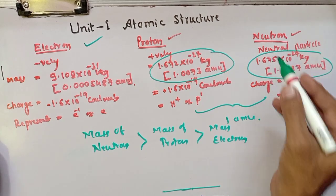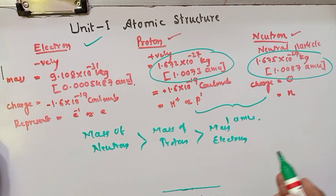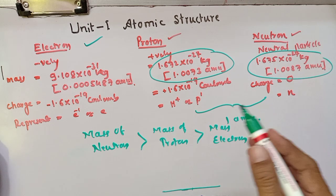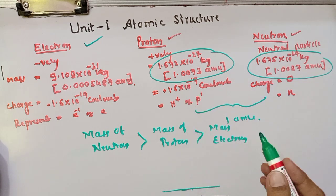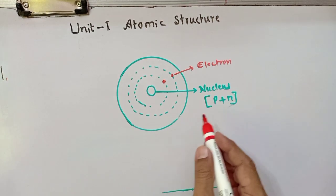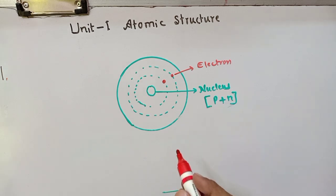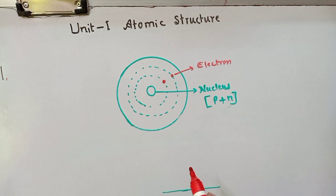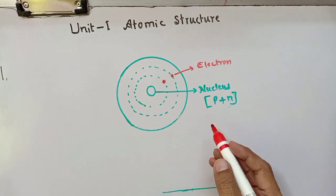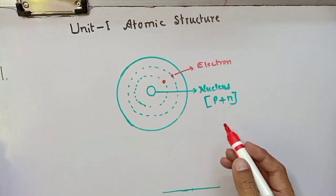The presence of neutron in the nucleus is very important because it minimizes the repulsion among the protons and hence causes an increase in the mass of the atom. Since the mass of the atom is almost entirely due to the presence of protons and neutrons, it is evident that almost the entire mass of an atom resides in the nucleus.